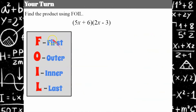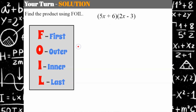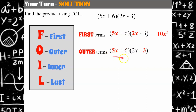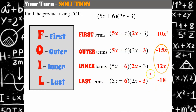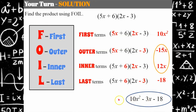Your turn — pause and try FOIL. Welcome back. First terms are 5x and 2x, which is 10x squared. Outer terms are 5x and negative 3, which is negative 15x. Inner terms are 6 and 2x, which is 12x. Last terms are 6 and negative 3 for negative 18. Combining like terms, negative 15x plus 12x is negative 3x. Product in standard form: 10x squared minus 3x minus 18.